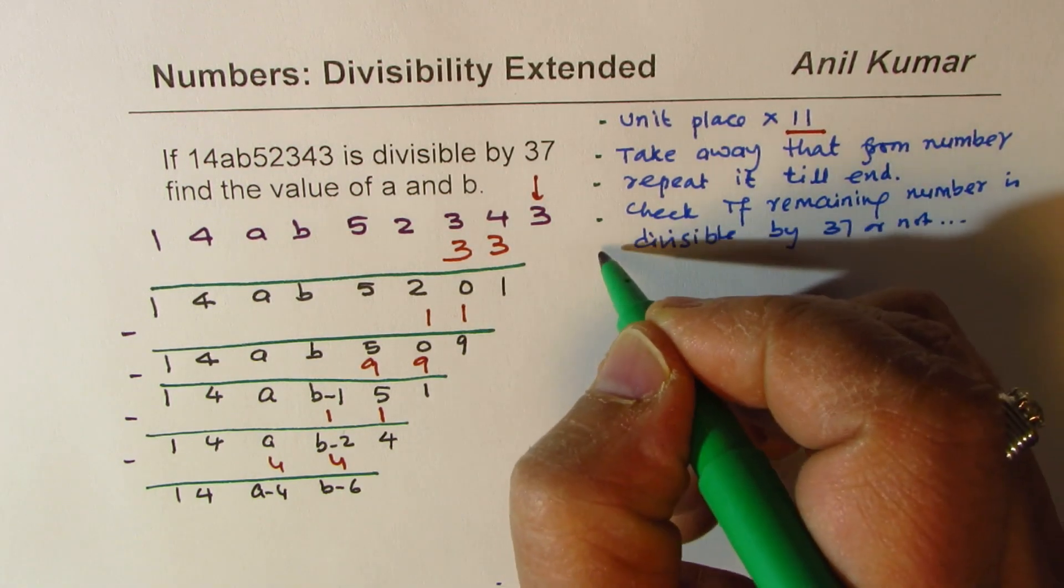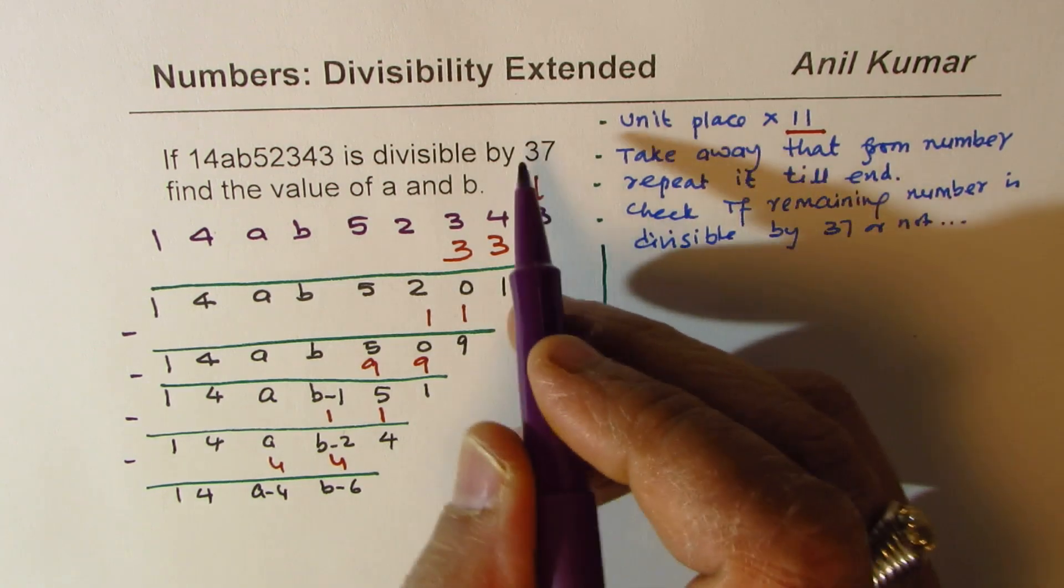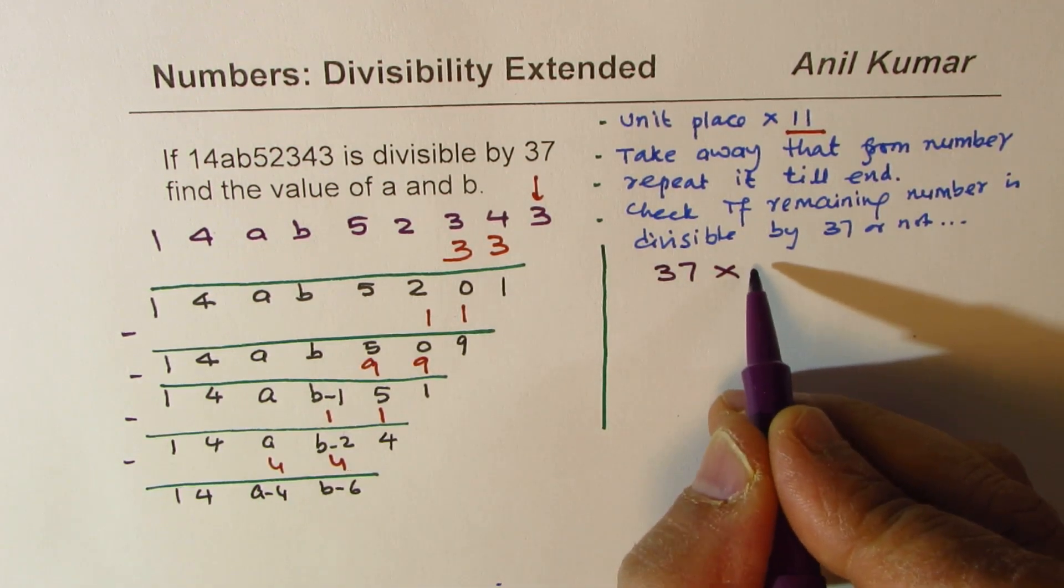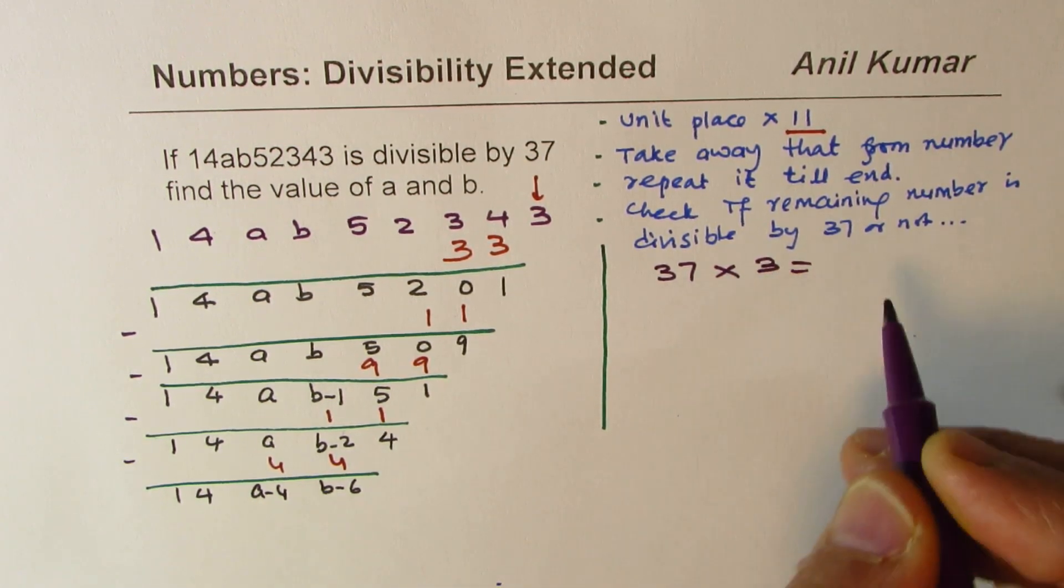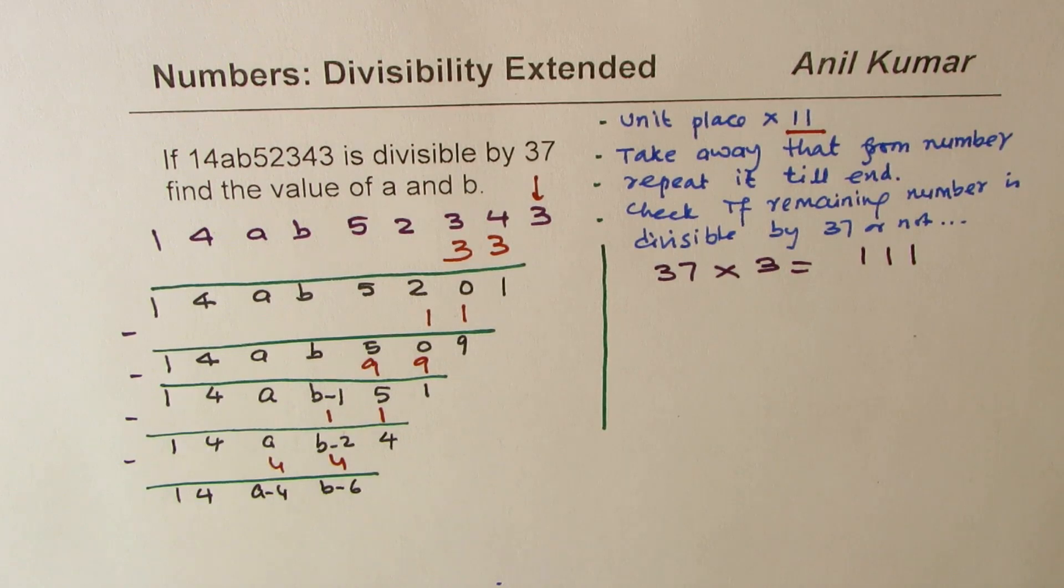What should we do next? So till now, I think the steps are clear. Unit place has been multiplied by 11, and rest of the number find difference with 11. Each step, we are just taking away that 11 multiple. And we get to this result. Now, what can we do? So, some thinking process. The number which we have is 1, 4, A minus 4, and B minus 6. We are looking for multiples of 37.